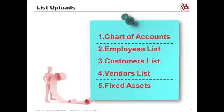Here are the five types of lists or items that you would upload — there are actually more, but for the basic skeleton: you start with your chart of accounts because that's the foundation of everything, then we upload the list of employees, then customers, then vendors, and then fixed assets. The employees, customers, and vendors uploads are very similar to each other, but very different from the chart of accounts, and fixed assets is completely different and will be covered separately.